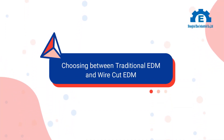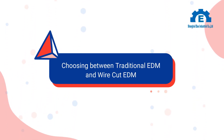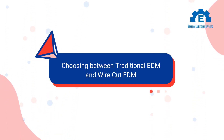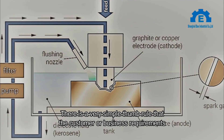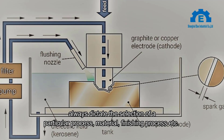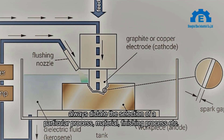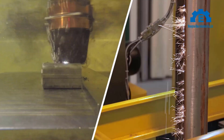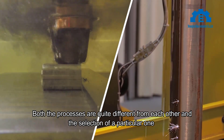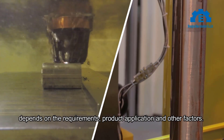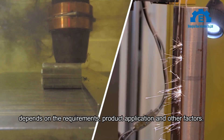Now we'll discuss what to consider when choosing between both these processes. There is a very simple thumb rule: the customer or business requirements always dictate the selection of a particular process, material, finishing process, etc. Both processes are quite different from each other, and the selection of a particular one depends on the requirements, product application, and other factors.